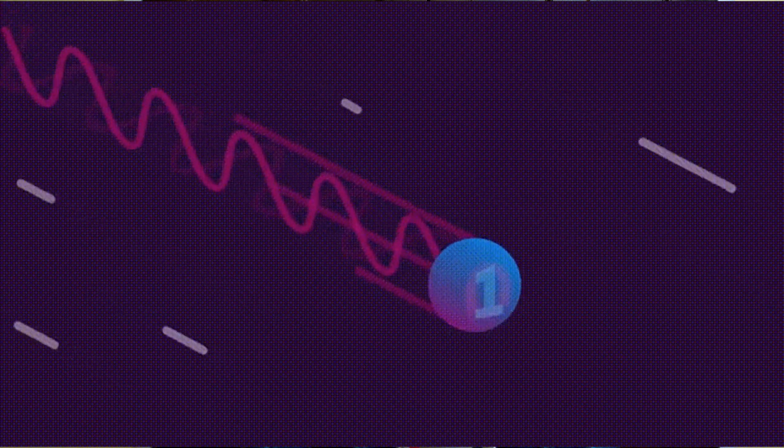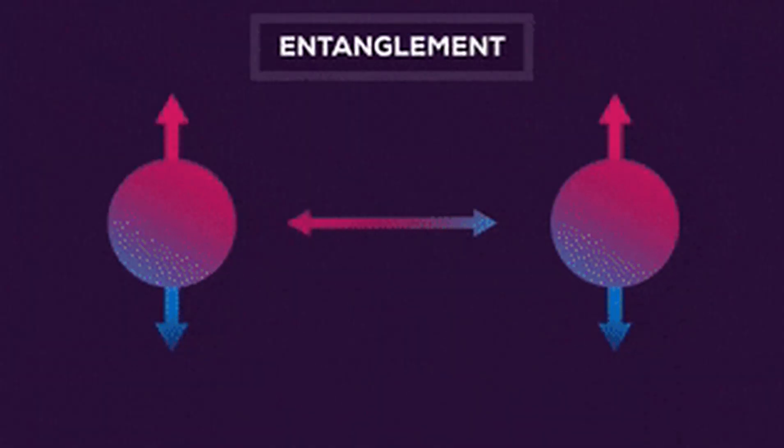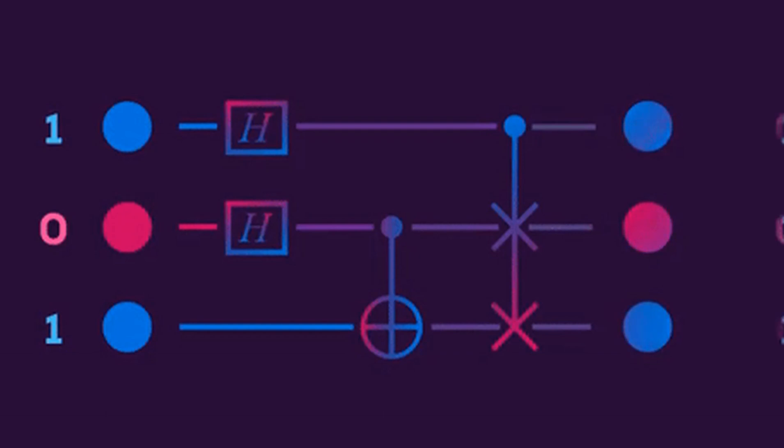Number two is entanglement. Entanglement is integral to quantum computing power. Pairs of qubits can be made to become entangled, meaning two qubits can exist in a single state. Because of this, changing one qubit can affect the other qubit in a predictable way. Quantum algorithms are designed to take advantage of this relationship to solve complex problems.